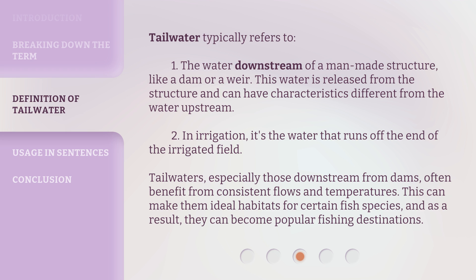Tailwater typically refers to: one, the water downstream of a man-made structure like a dam or a weir. This water is released from the structure and can have characteristics different from the water upstream. Two, in irrigation, it's the water that runs off the end of the irrigated field.